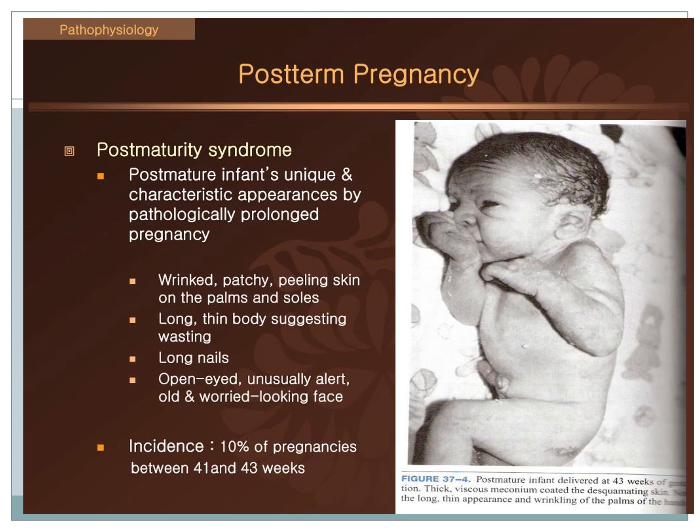A post-term pregnancy would produce a post-mature infant with a unique and characteristic appearance produced by a pathologically prolonged pregnancy. This would include wrinkled, patchy, peeling skin; a long, lean body suggestive of wasting; advanced maturity; open eyes which are alert and appear worried; wrinkling of palms and soles; and long nails. Incidence is 10% of pregnancies between 41 and 43 weeks.